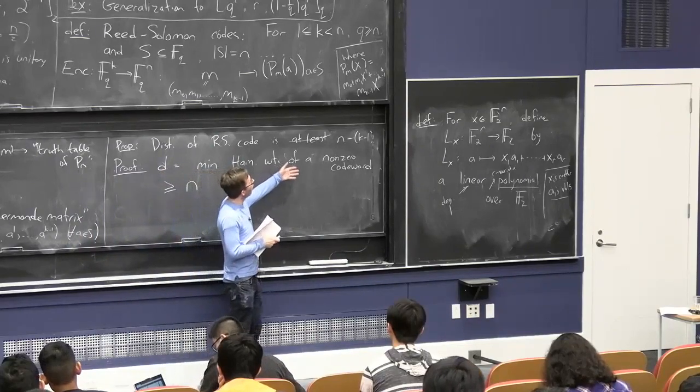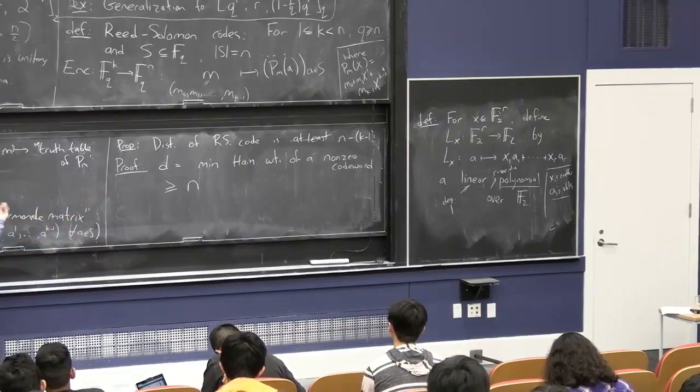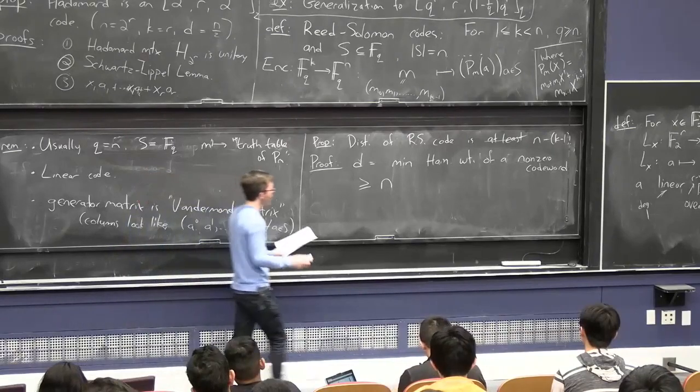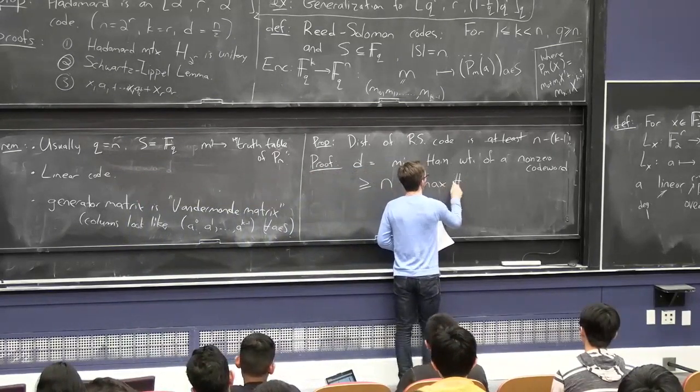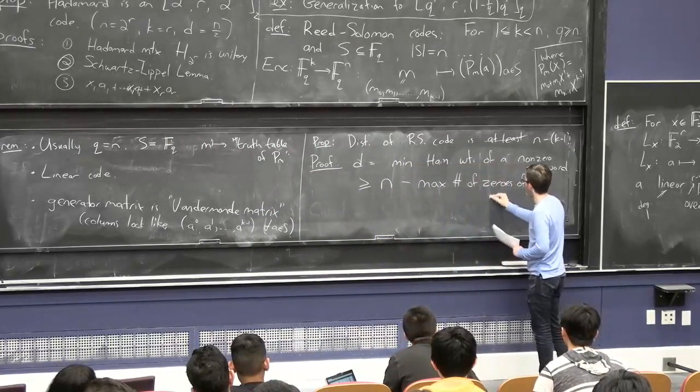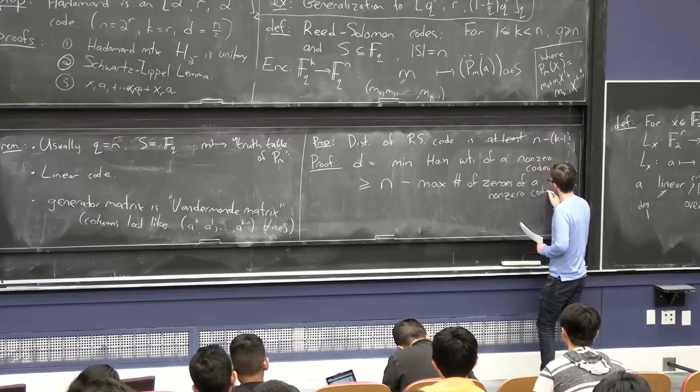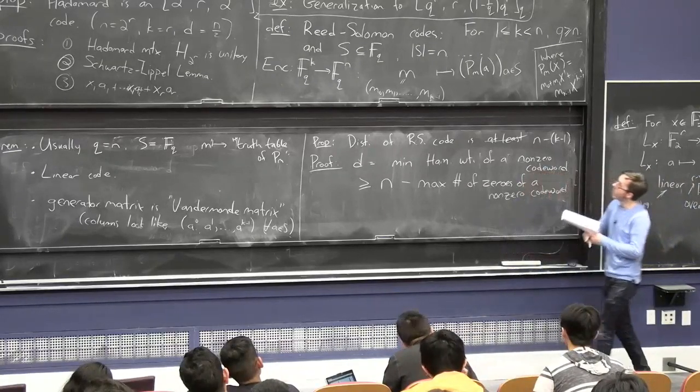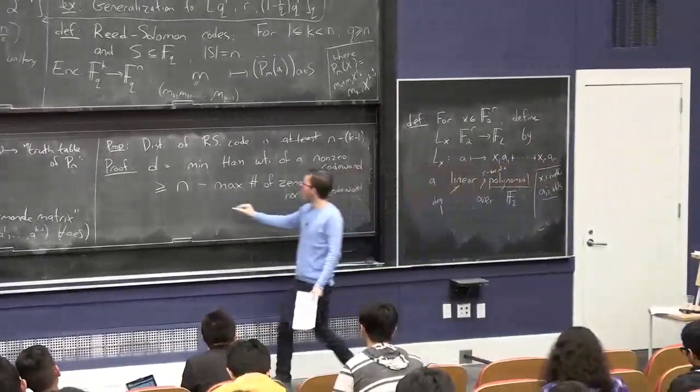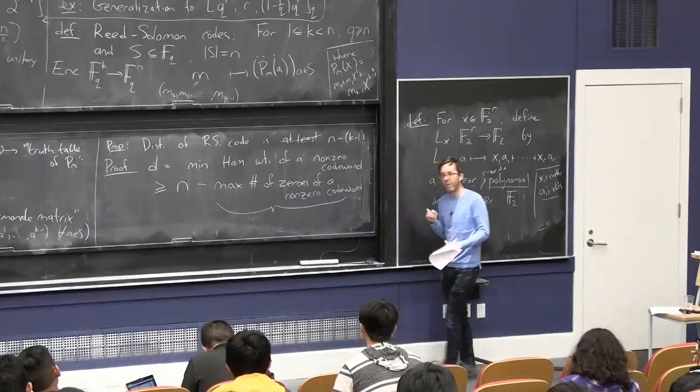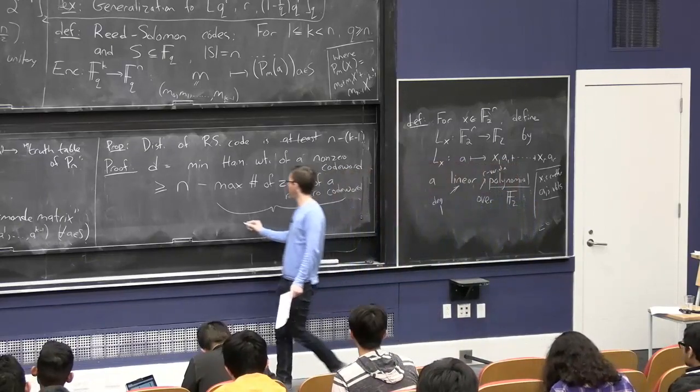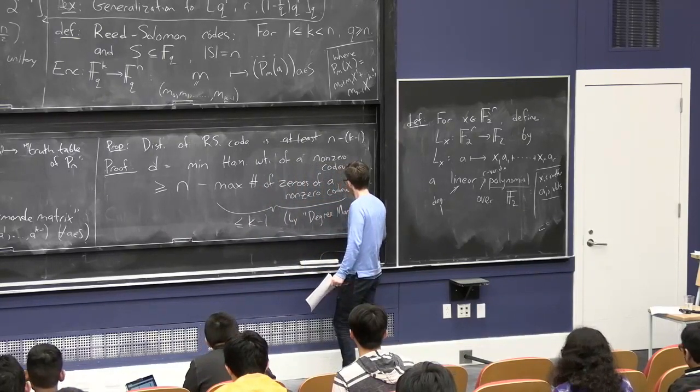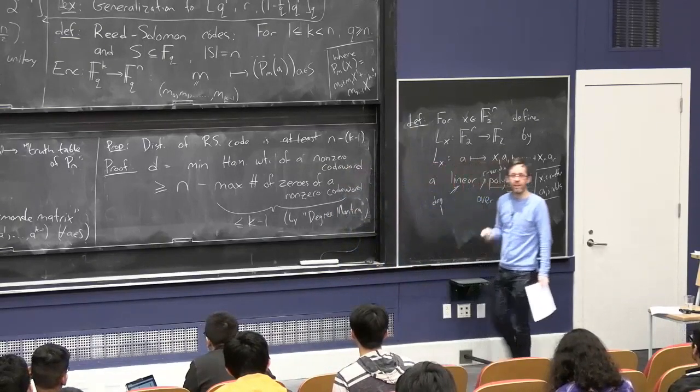You're looking at the Hamming weight of a non-zero codeword. That means you're looking at all the places. You're counting the number of places where the polynomial p sub m is non-zero. So that's n minus the number of places where the polynomial is zero. So this is n minus the maximum number of zeros of a non-zero codeword. But these codewords are like the truth tables of a polynomial of degree k minus one. So by this important degree mantra we saw last time that says if you have a non-zero polynomial of degree at most k minus one, it has at most k minus one zeros. This quantity, this maximum number of zeros, is at most k minus one. It's a degree mantra. And that's the end of the proof that the distance is at least n minus k plus 1.